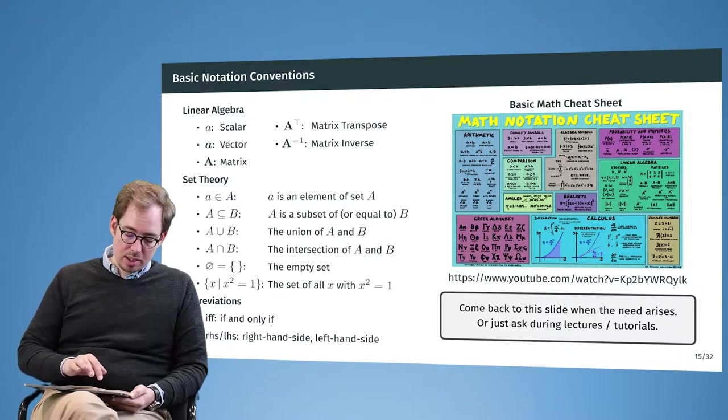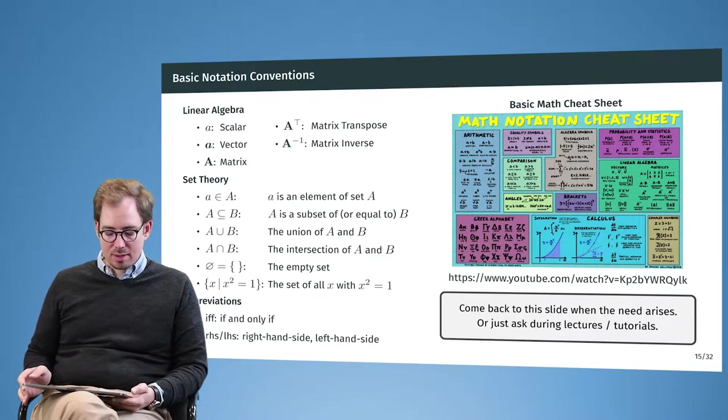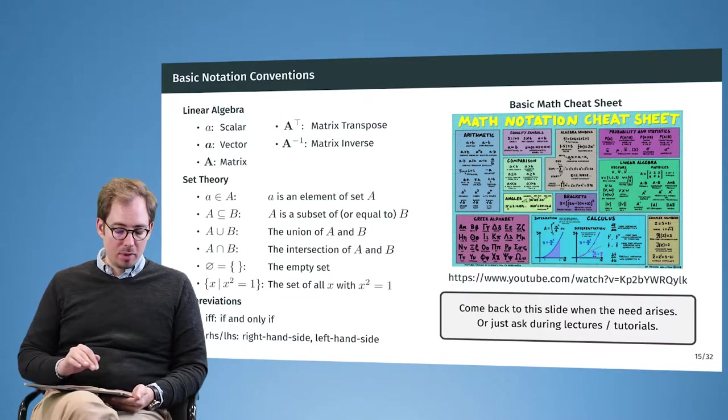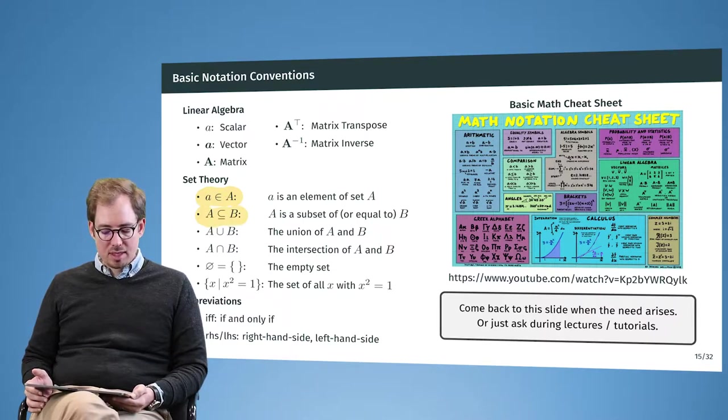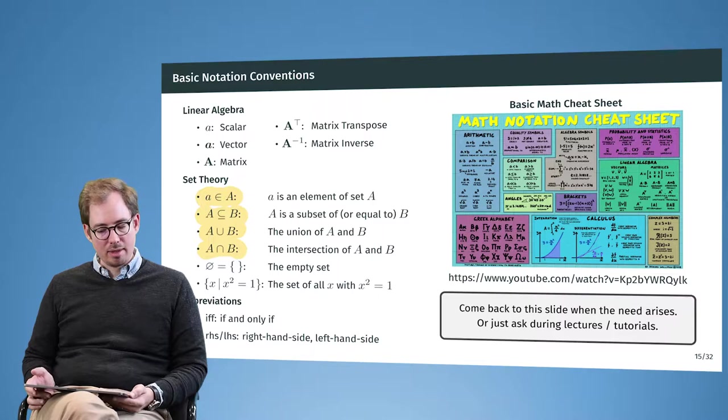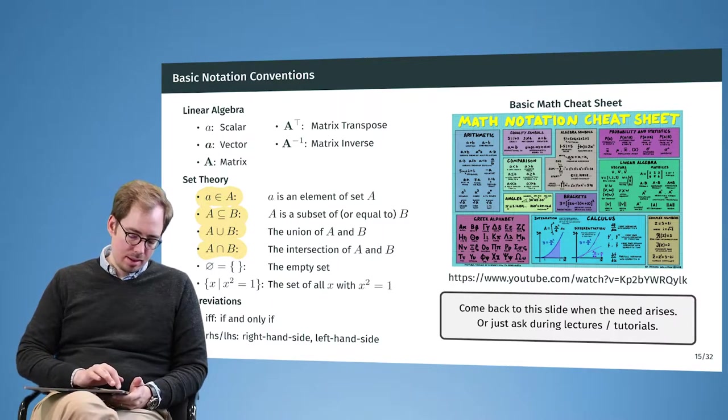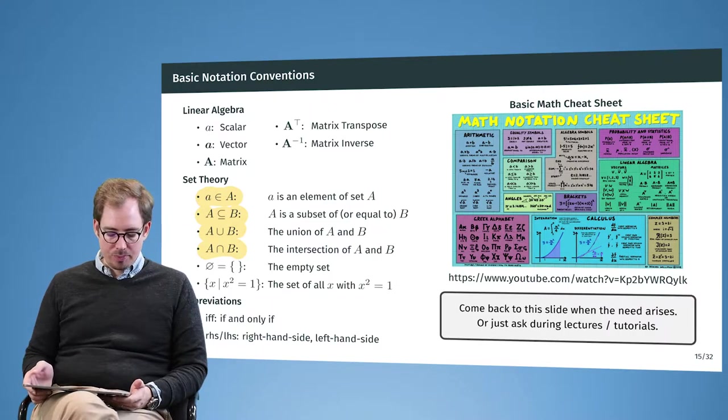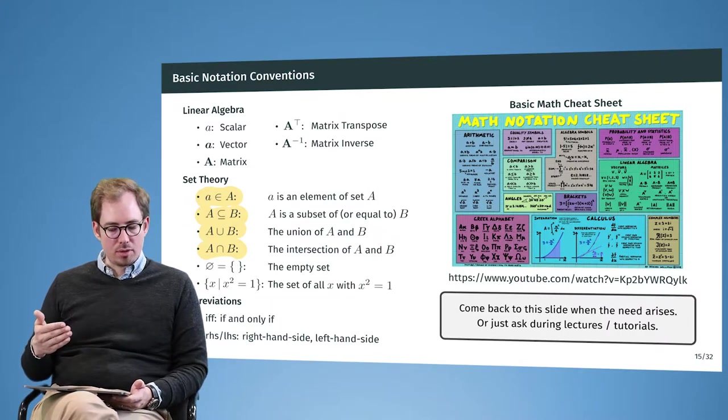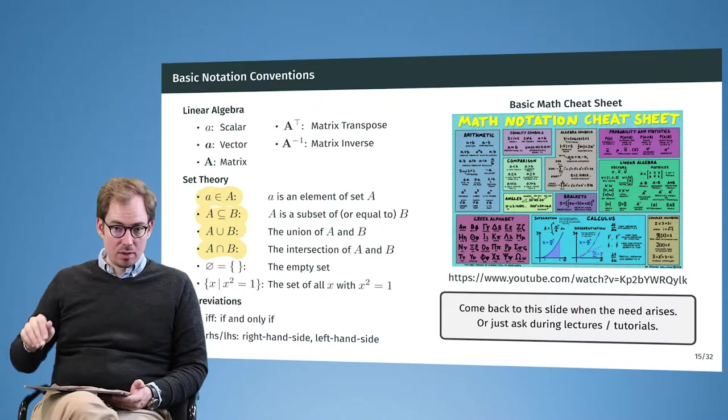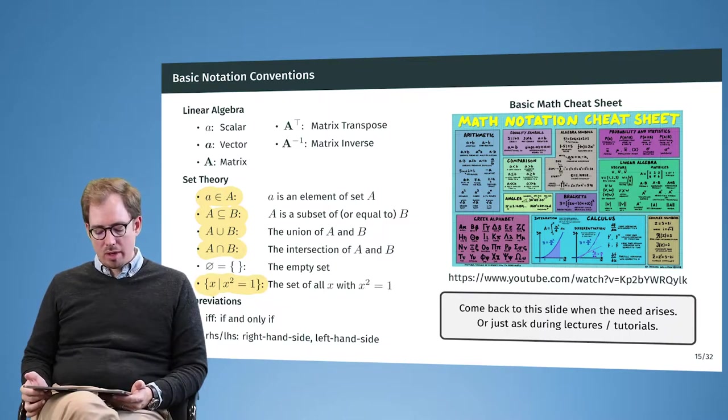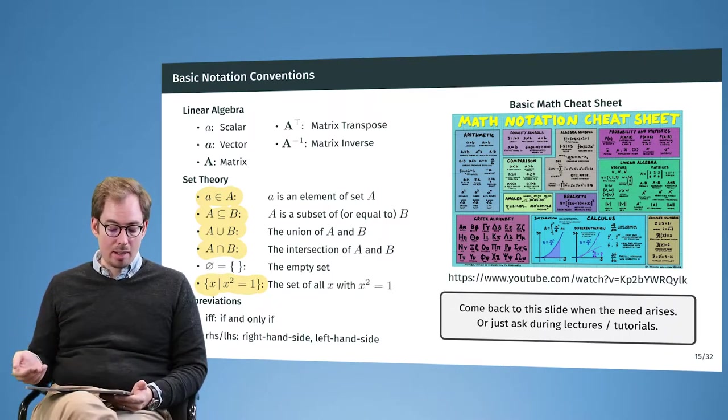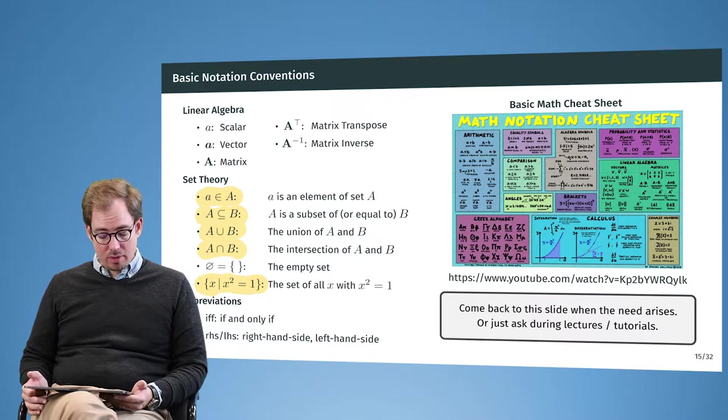Going forward here, we have also notation for sets. For example, this big A is a set and small a is an element of that. And we can have then containment or subsets of these sets. We can have unions, intersections, we have the empty set. And something that will be quite important later on is a set with a certain constraint over the condition. So here we have the set of all x squared, of all x where x squared equals to 1. So this set will contain exactly 1 and minus 1. This is just a notation that you might not be familiar with that occurs later on.